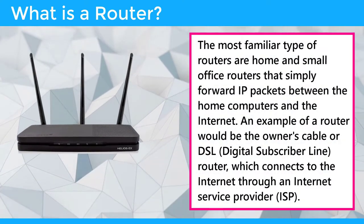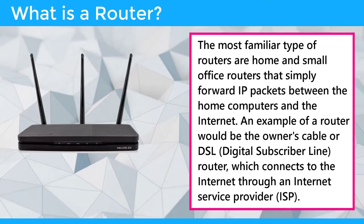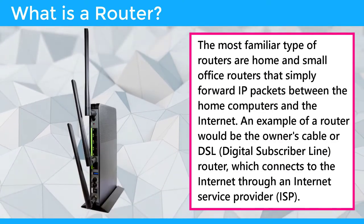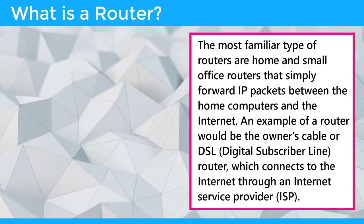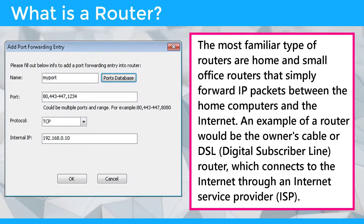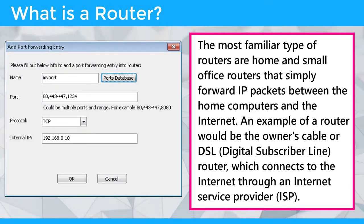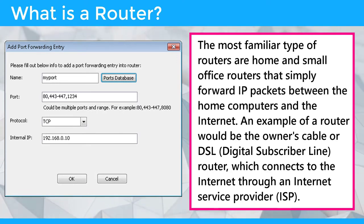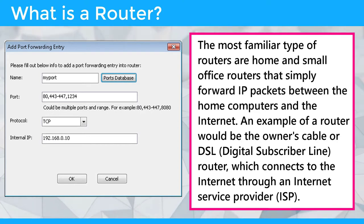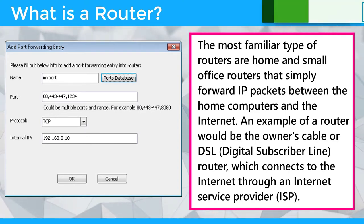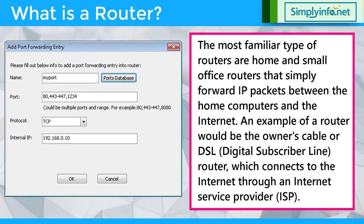The most familiar type of routers are home and small office routers that simply forward IP packets between the home computers and the internet. An example of a router would be the owner's cable or DSL router, meaning digital subscriber line, which connects to the internet through an internet service provider.